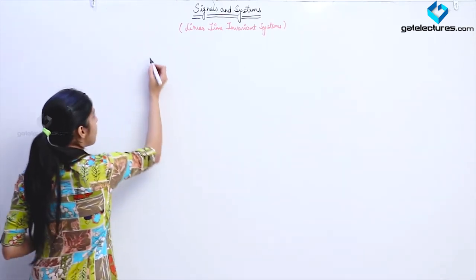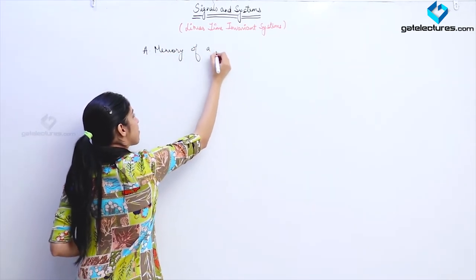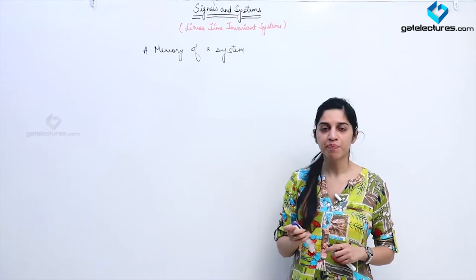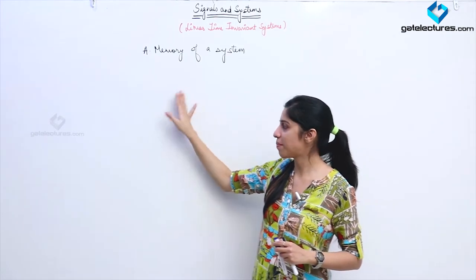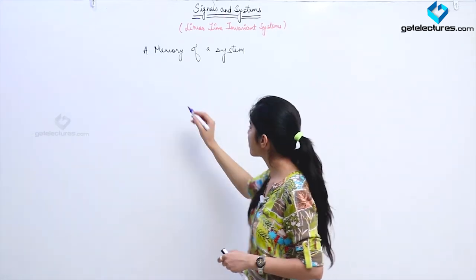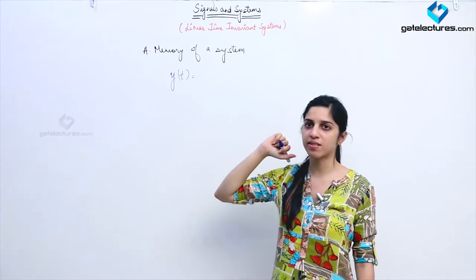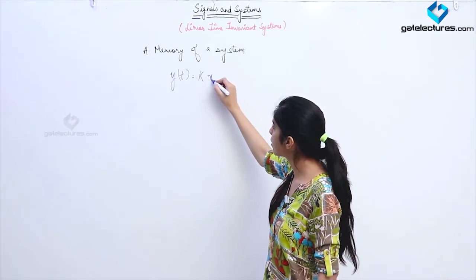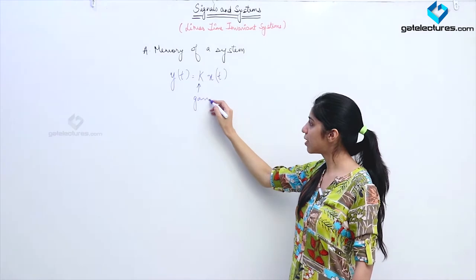First, let's consider the memory of a system. We saw that a system is memoryless, or static, if its output depends only on the present input — only on the input given at the same time instance. If it depends on any input given in the past, then the system is known as a dynamic system. So for a memoryless LTI system, the output is related to the input by Y(T) = K·X(T), where K is some gain — only this gain is going to appear.